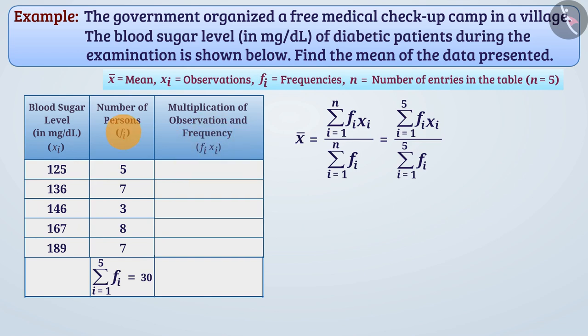For the first observation, f_1 X_1 is equal to 125 multiplied by 5, which equals 625. Similarly, we will find f_i multiplied by X_i for other observations.